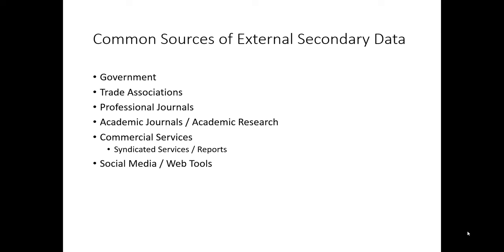Much of the secondary information that marketing researchers use comes from external sources. Let's take a look at some of the most typical places that we find useful secondary information to answer marketing research questions. Government sources, trade associations, professional journals, academic journals, commercial services, and social media and web tools highlight some of the key categories where we can find useful secondary information.